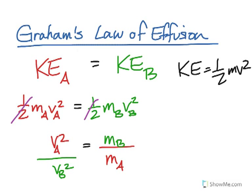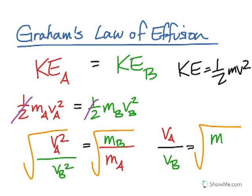And from here, what we need to do is take the square root of both sides. And that gives us the velocity of A divided by the velocity of B equals the square root of the inverse of the molar masses, so MB divided by MA, which is Graham's law of effusion.